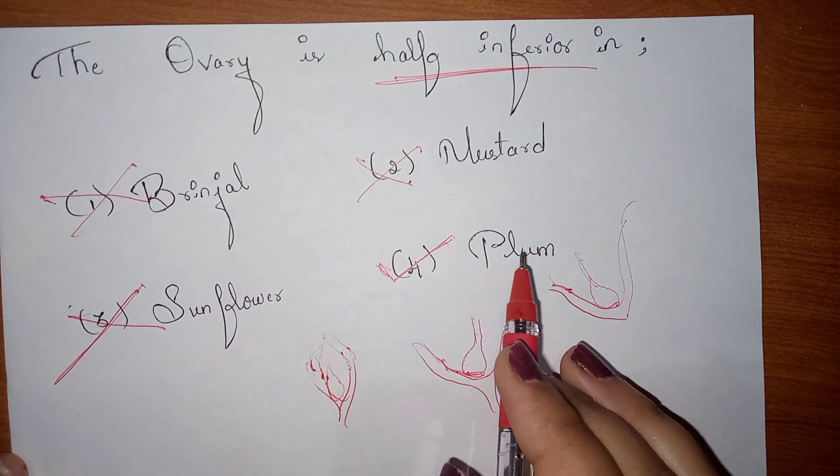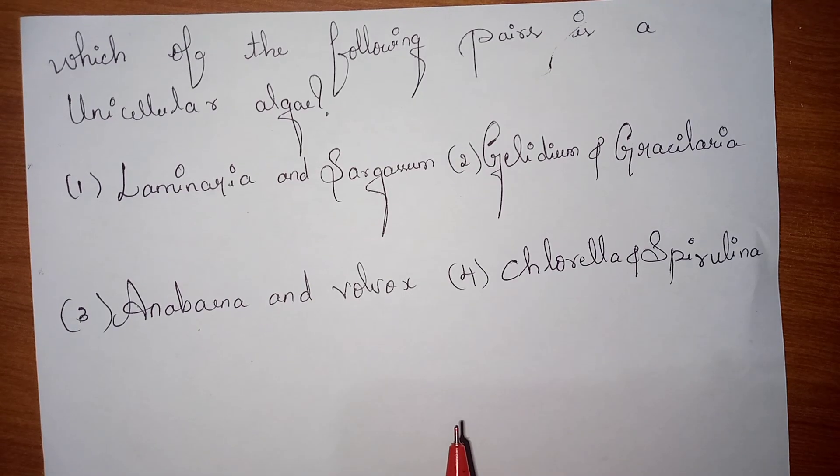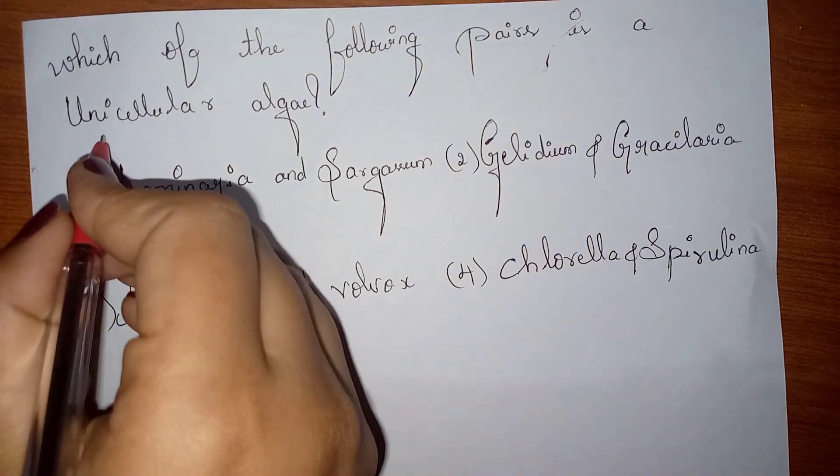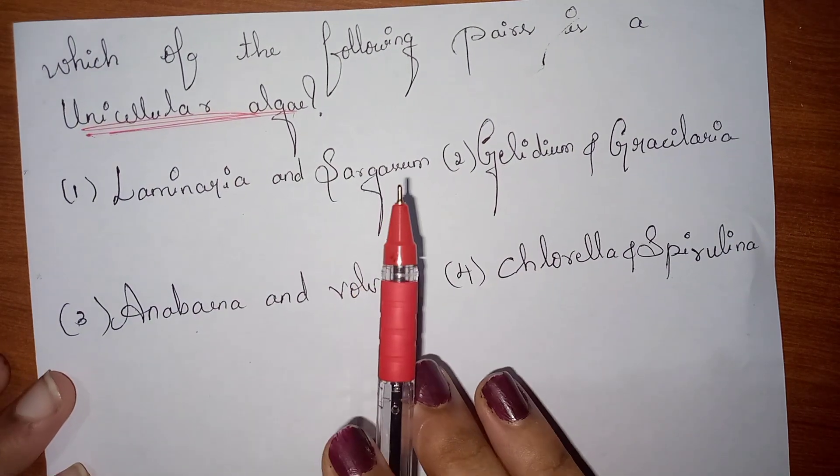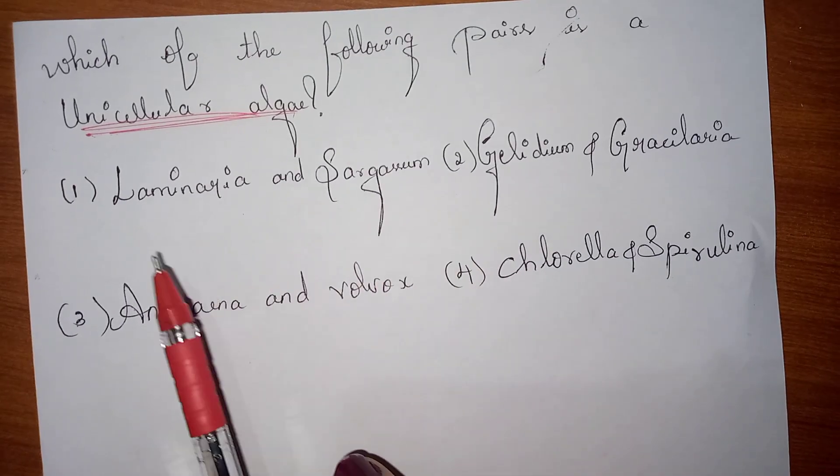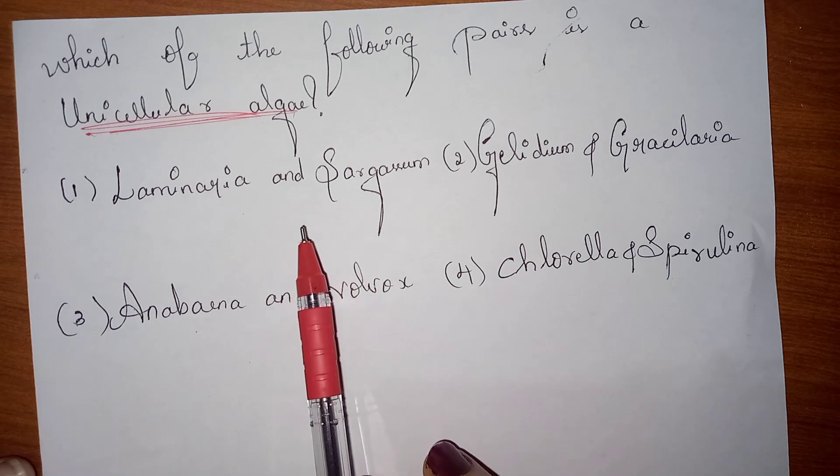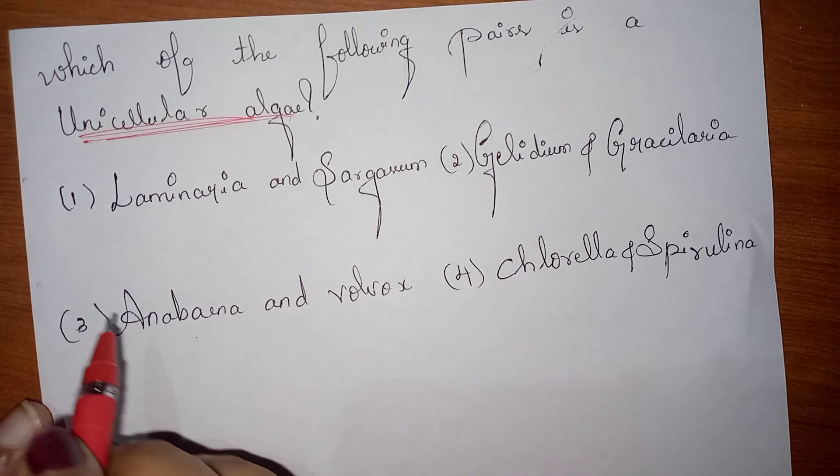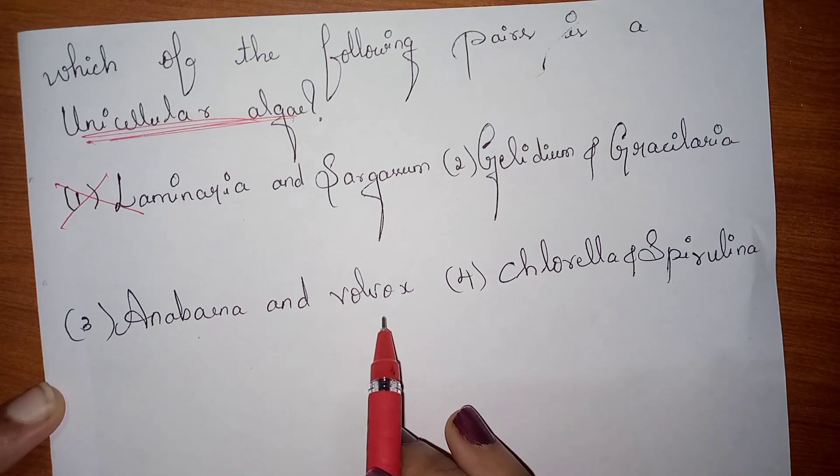The next question is: Which of the following pairs is a unicellular algae? Unicellular means it should have only single cell. As we observe, the first option is Laminaria and Sargassum. It is multicellular, both are multicellular, so this is not our answer.